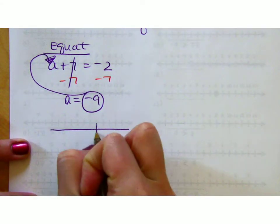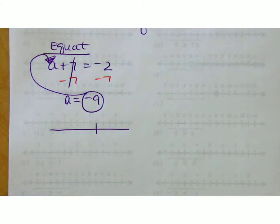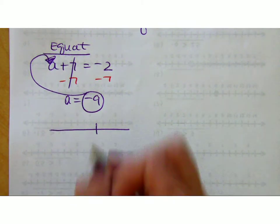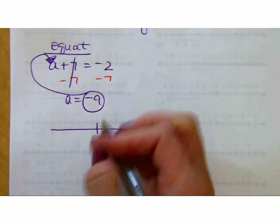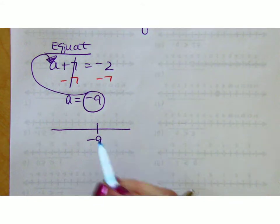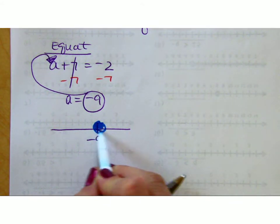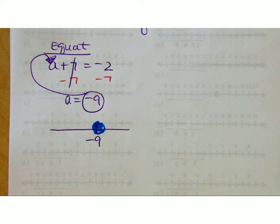If I were to ask you to graph your solution for an equation, it would be a pretty simple graph. It would be literally at negative 9, that's all it can be. It can't be any number to the left of it. It can't be any number to the right of it. It's just a point. One answer.